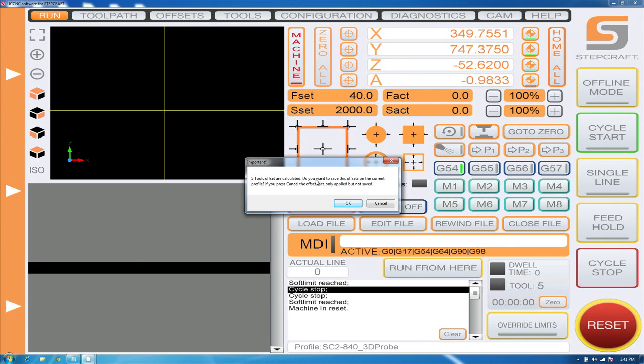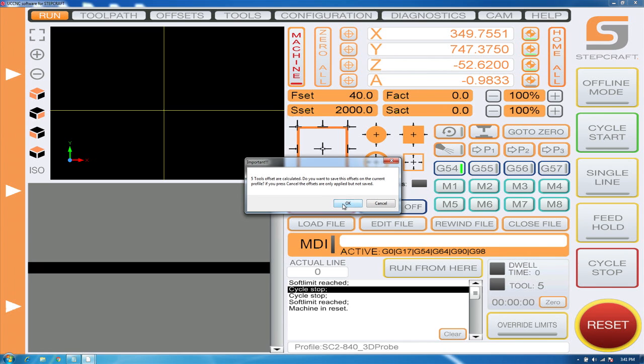If you were using these tools for only one job, we could click cancel and the tools would be applied but not saved. If these were tools you use often, we'd save them into a profile for later use. We're going to click OK. And now all five of our tools have been set for their Z heights.